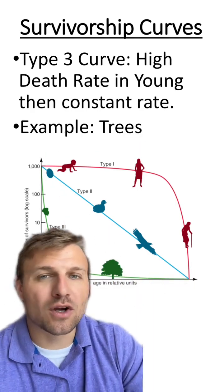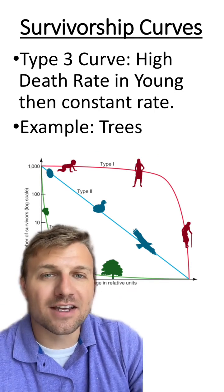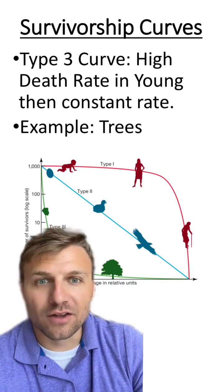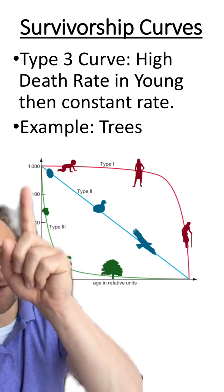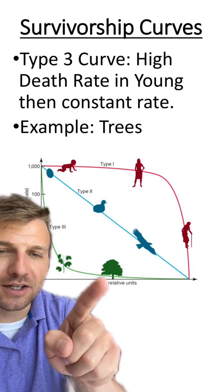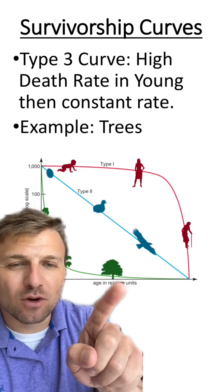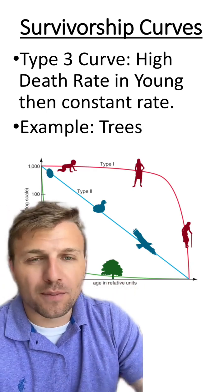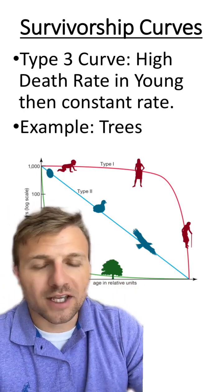The last type of curve, which is called the type 3 curve, has a high death rate in the young, but a very low death rate later on. As you can see in the trees, there is a high death rate within the seedlings, and only a small portion will make it to adulthood. At this point, you're going to see more of a constant rate, but a low proportion of the original seedlings will make it to adulthood.